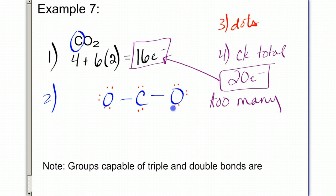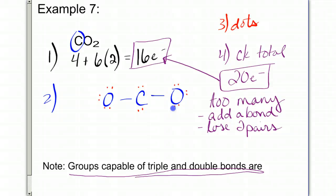And a different situation has occurred. In order to deal with having too many, I'm going to do what's called add a bond, and I'm going to lose two pairs. Now, I can only add a bond between groups or elements that are capable of triple and double bonds. And I can tell you that elements that can have triple and double bonds are going to be carbon, oxygen, and nitrogen. So anything in groups 4, 5, or 6, basically, can have double or triple bonds. So you're going to notice that carbon's in group 4, and oxygen is in group 6. So both, all these elements can handle having more than one single bond. They can have a double or a triple.